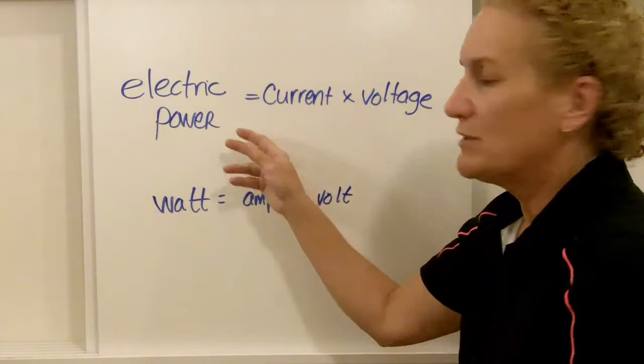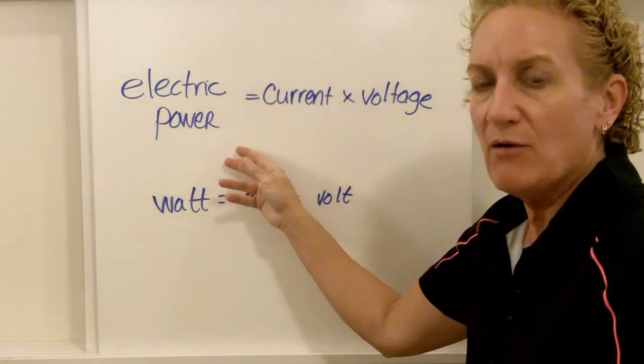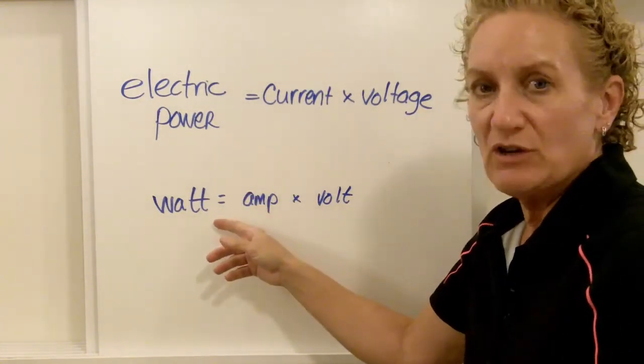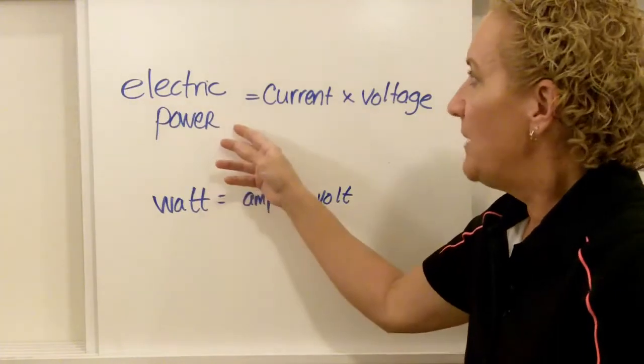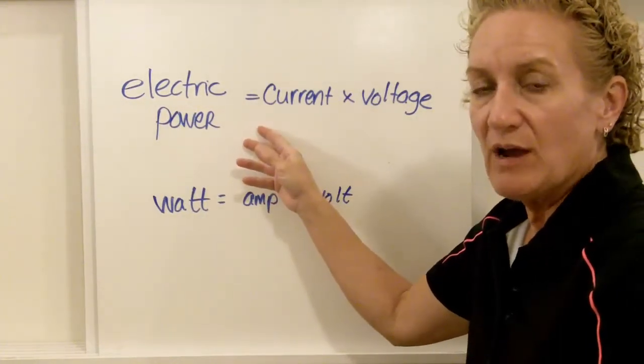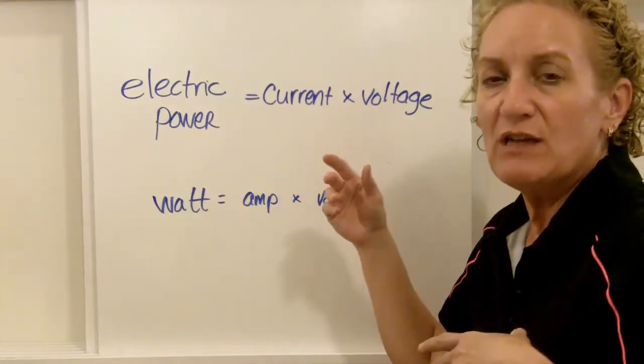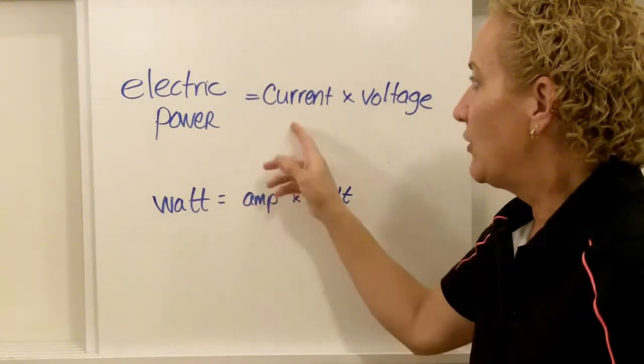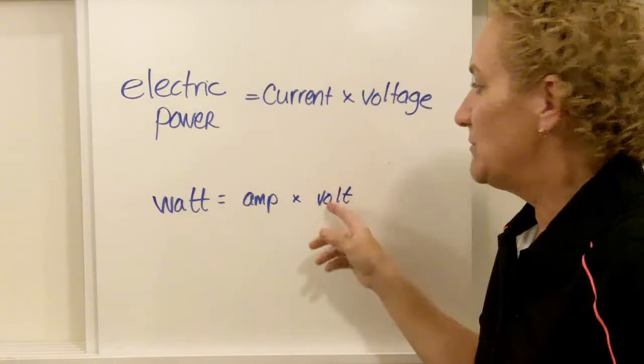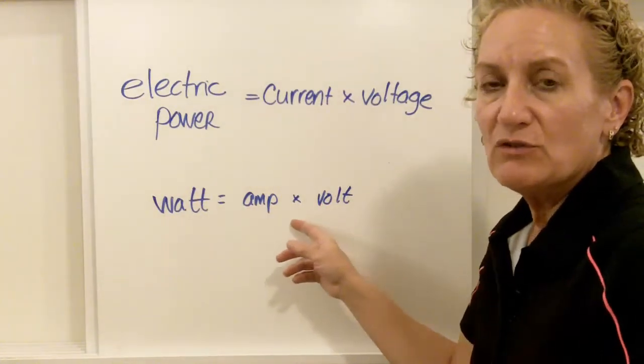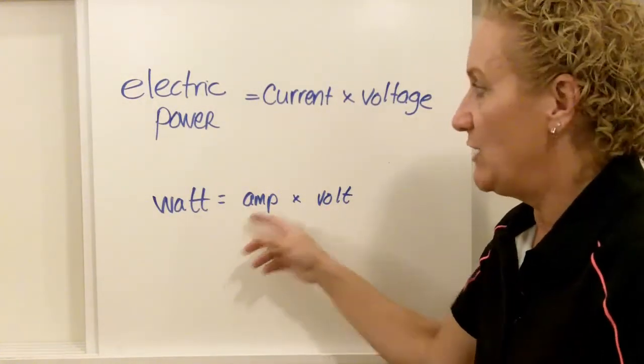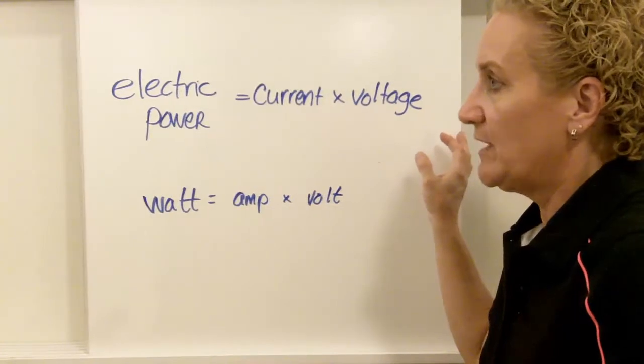So first thing I want you to know is electrical power. It's power, so you expect it would be measured in watts and it is. Power is mathematically derived by taking the current times the voltage. Just multiply those two together and you get power. Current is measured in amps, voltage is measured in volts, so multiply those two things together and you get watts, which is the electrical power.